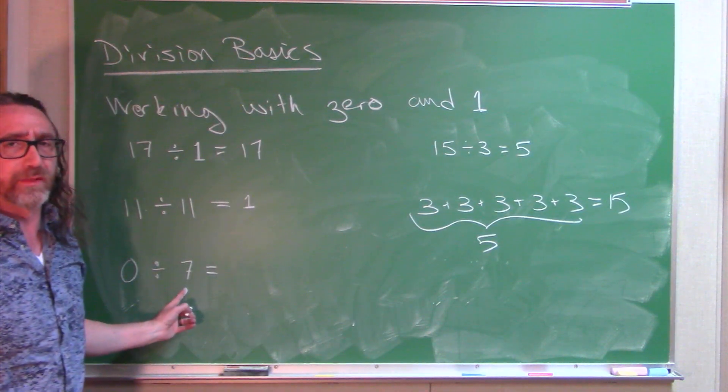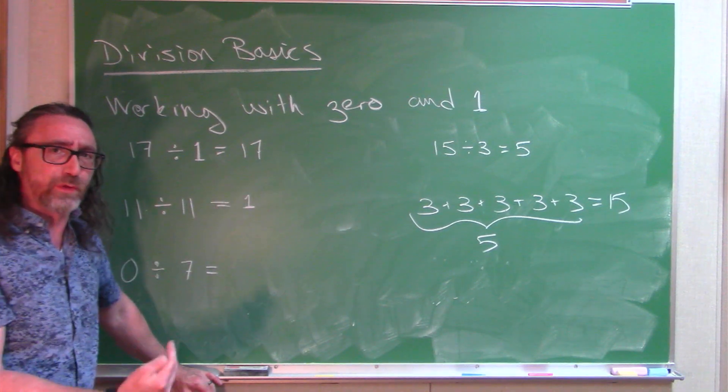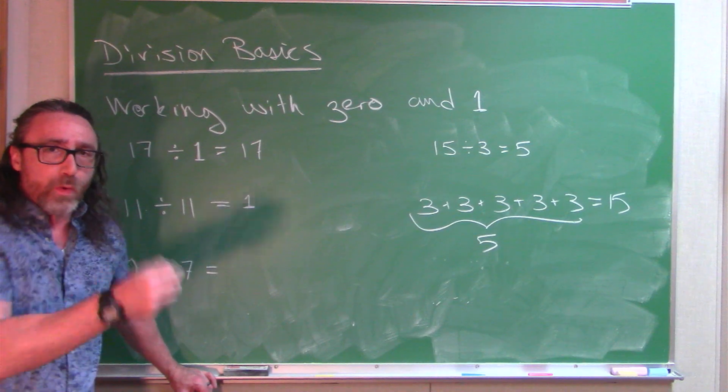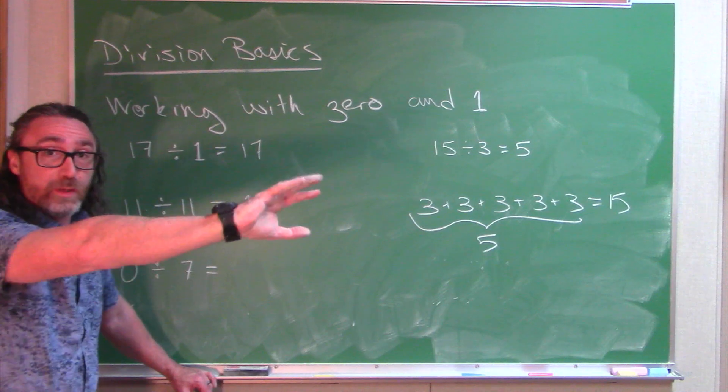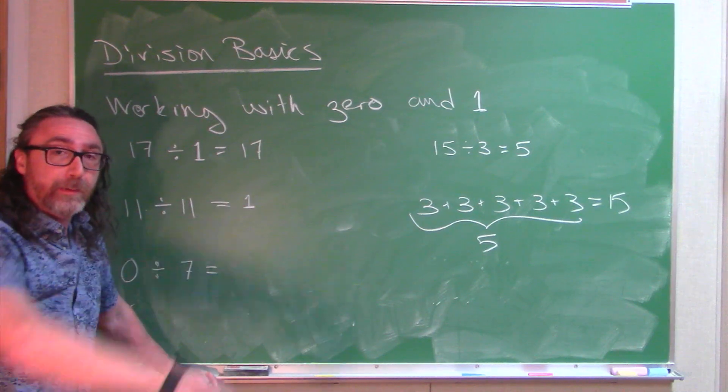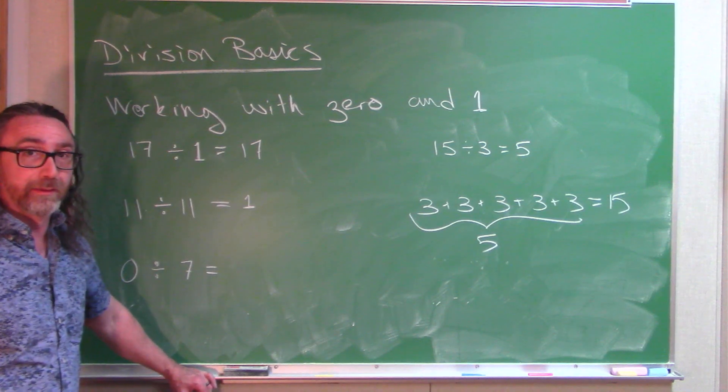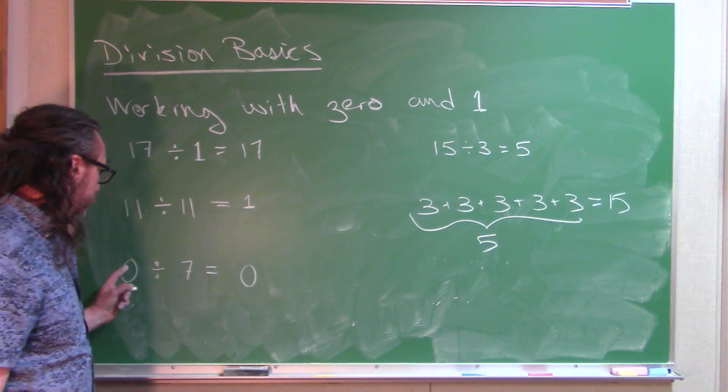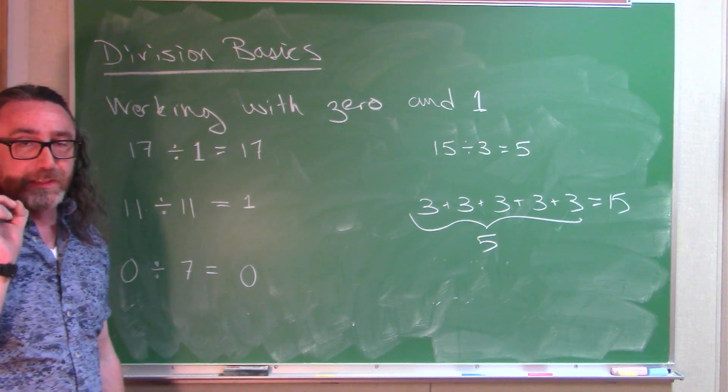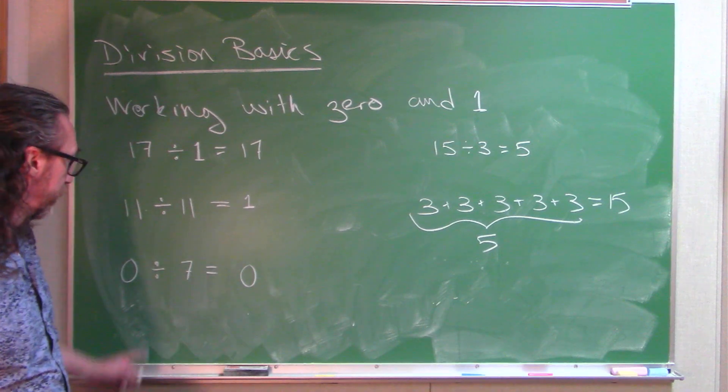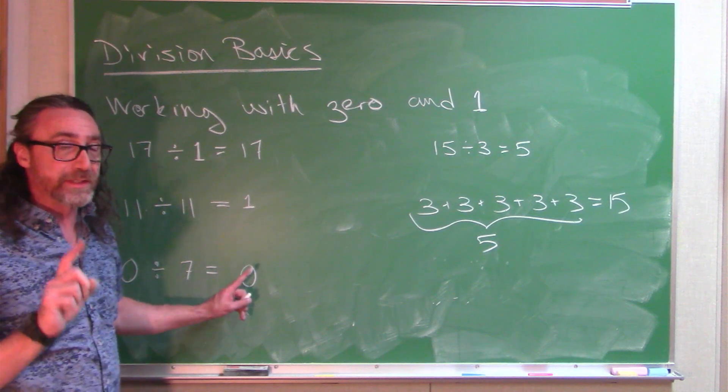Well, if I throw in even a single 7, I would have more than 0. If I throw in one 7, I have 7. If I throw in two 7's, I have 14. If I throw in three 7's, I have 21. So I'm going the wrong direction. My problem is throwing in that first 7. I shouldn't have thrown in anything, and I would have had 0. So 0 divided by any non-zero number is 0. If you have a 0 as the dividend, your answer is 0.